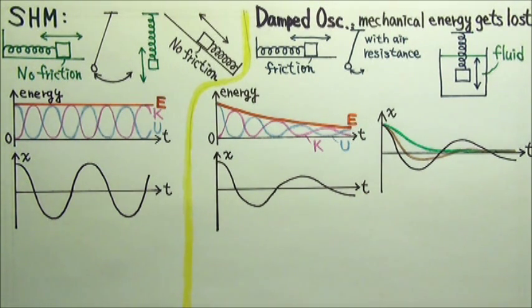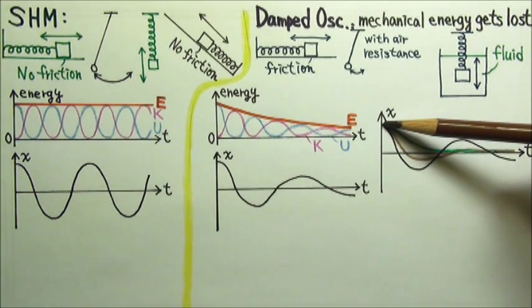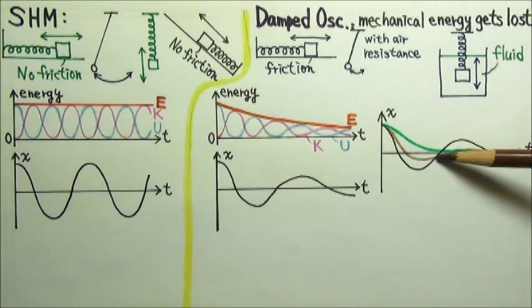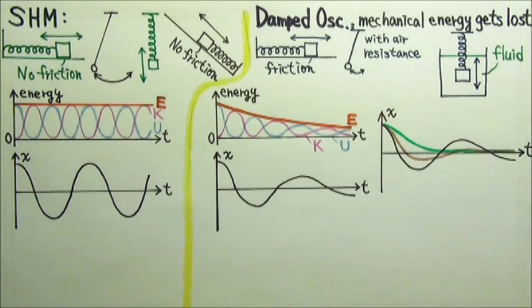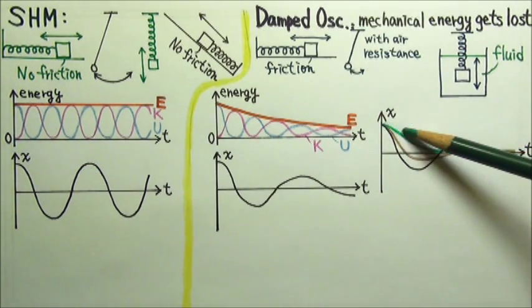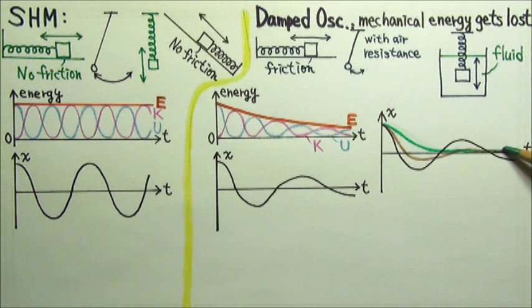If the damping effect is very large, for example, when an oscillator has to move through a thick fluid, the resulting position as a function of time can look like this, or this, when an oscillator comes to a stop before it has a chance to pass through the equilibrium.